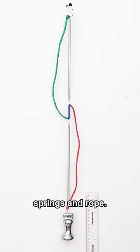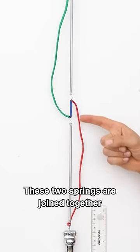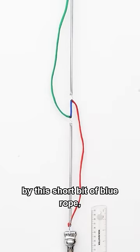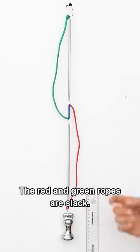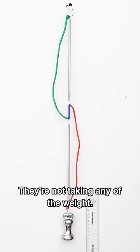Look at this arrangement of springs and rope. These two springs are joined together by this short bit of blue rope, and there's a weight on the bottom. There's also a red rope and a green rope. The red and green ropes are slack. They're not taking any of the weight.